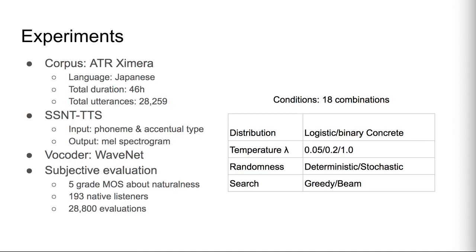This is an experiment for the alignment sampling methods. To investigate which combination of alignment prediction methods is better, we conducted a listening test on naturalness. We used a Japanese speech corpus to build an SSNT-TTS model, and WaveNet for waveform generation. For alignment prediction conditions, we included 18 combinations, including three temperature parameter values.